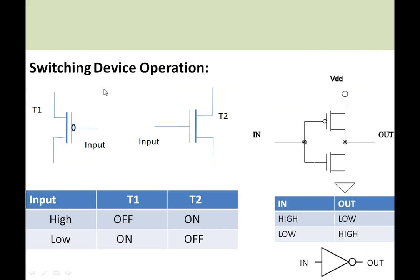Before going into the logic discussion of SRAM and DRAM, we need to know the switching device operation. This is a PMOS switch — a P-channel metal oxide semiconductor switch — and this is an NMOS, that is N-channel metal oxide semiconductor switch. The truth table of these switches is shown here: whenever the input is high for the PMOS switch, the switch is off; whenever the input is low, the device will be on.